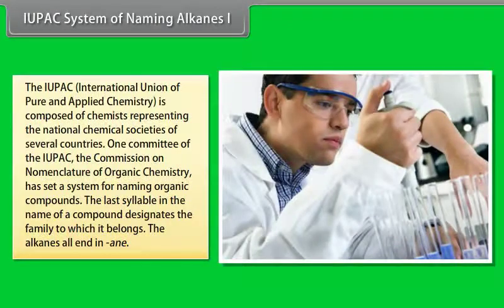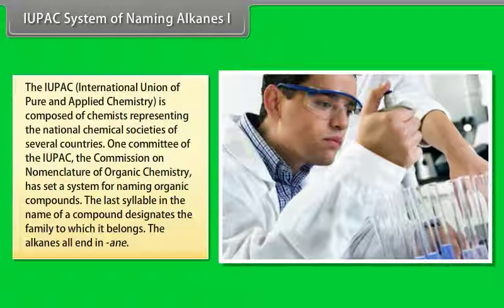IUPAC system of naming alkanes: The IUPAC, International Union of Pure and Applied Chemistry, is composed of chemists representing the national chemical societies of several countries. One committee of the IUPAC, the Commission on Nomenclature of Organic Chemistry, has set a system of naming organic compounds. The last syllable in the name of compound designates the family to which it belongs. The alkanes all end in -ane.